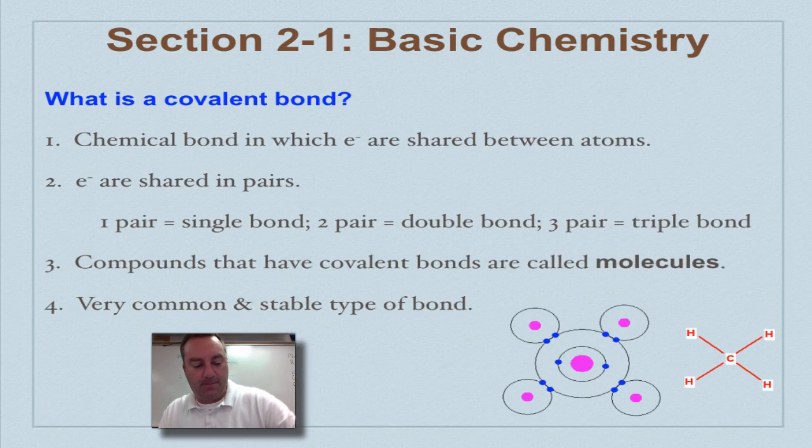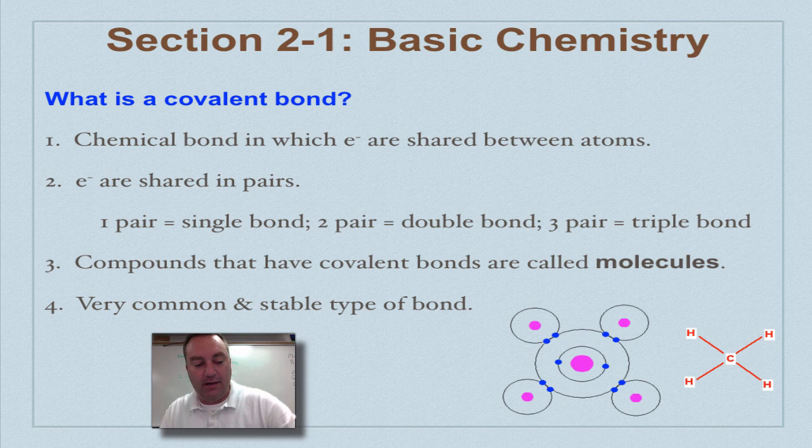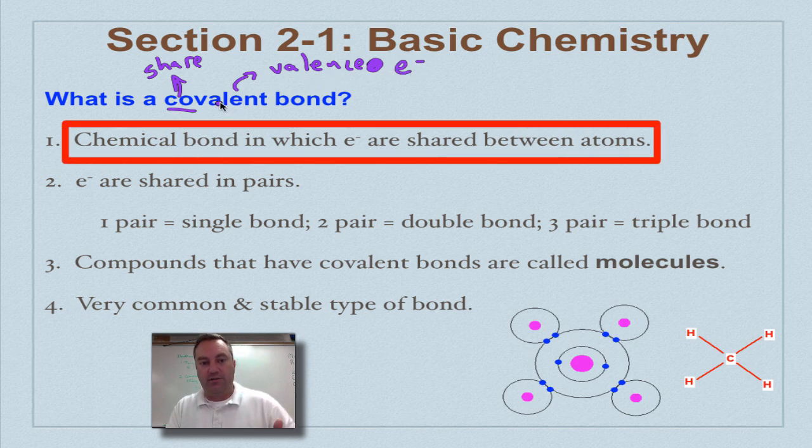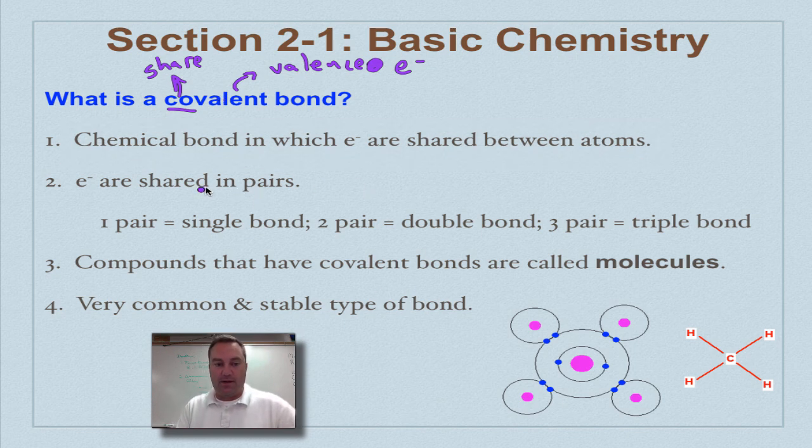Covalent bond. I want to let you know that this word is trying to tell you what it means. Co- means to share, and then valent refers to valence electrons. So in a covalent bond, you're sharing valence electrons to get to that magic number of eight. Electrons are shared in pairs. This is real important.